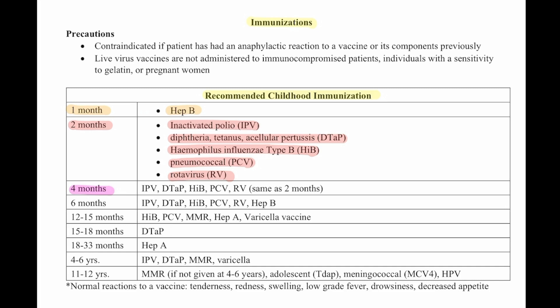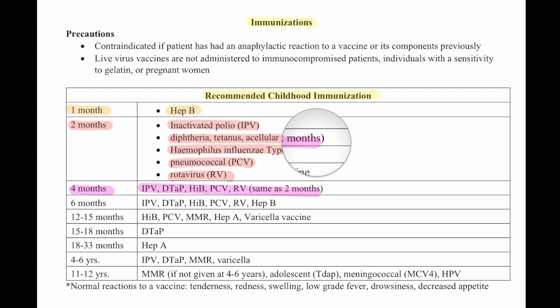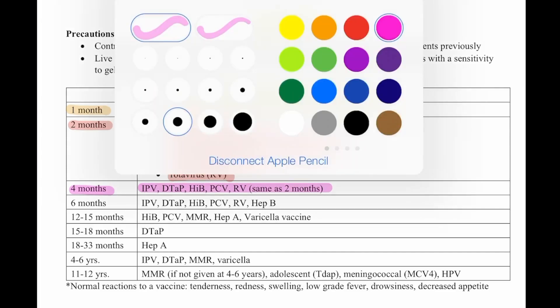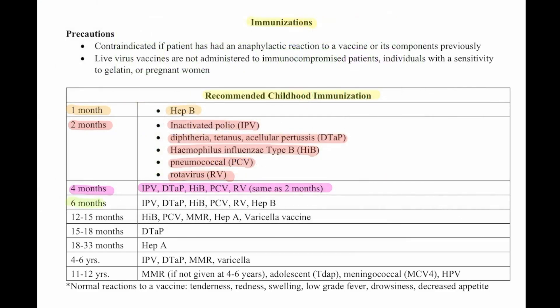At four months, they'll again get the inactivated polio, DTaP, influenza type B, pneumococcal, and rotavirus — all the same as the two-month visit. At six months, they will again get the inactivated polio, DTaP, influenza type B, pneumococcal, rotavirus, and again the hepatitis B — the same as the two and four month visits but adding the hepatitis B from one month.